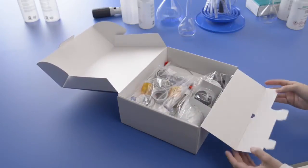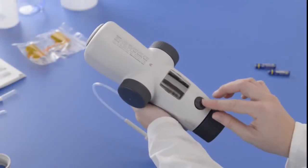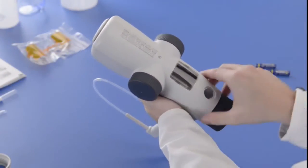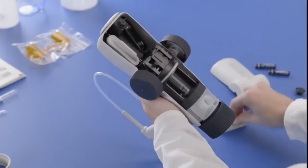Unscrew the air vent cap from the housing to remove the rear housing. Then remove the battery case covers.